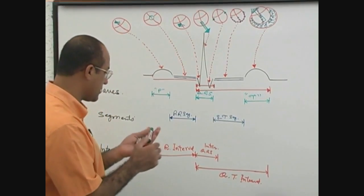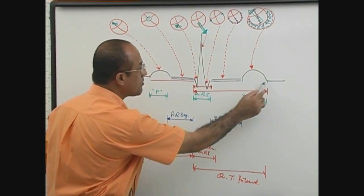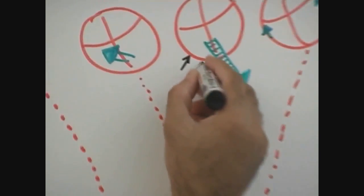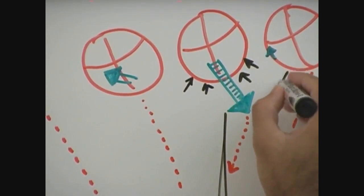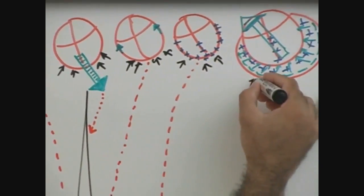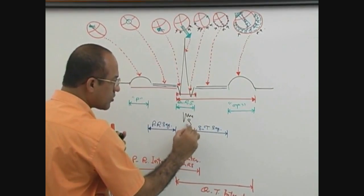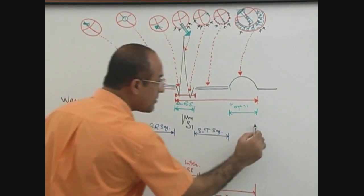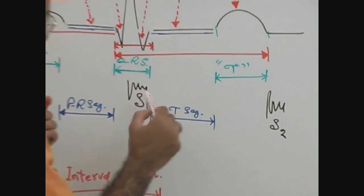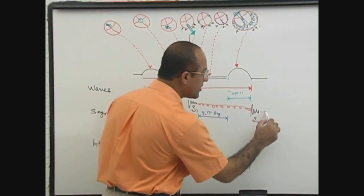From the beginning of the QRS to the end of the T wave, the ventricles are in systole — they start contracting, producing S1, and keep on contracting throughout. When contraction ends and diastole begins, S2 is produced. Between S1 and S2 is ventricular systole, and after S2 is ventricular diastole.